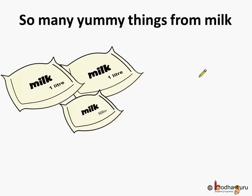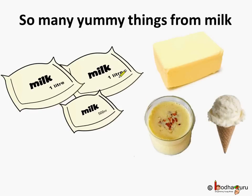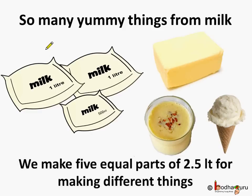Let's say we want to make some yummy things from milk and you have 2.5 liters of milk — 1 liter plus 1 liter plus 500 milliliters. You want to make different yummy things from the milk: butter, ghee, ice cream. To make that you need to divide 2.5 liters of milk into five equal parts. So how much milk will each part have?